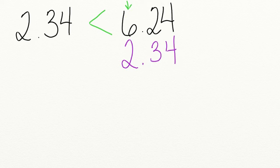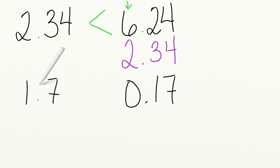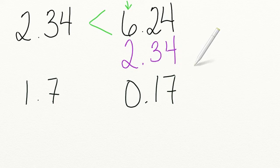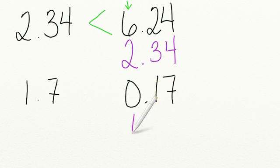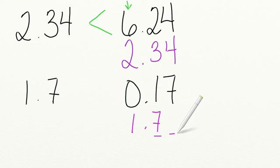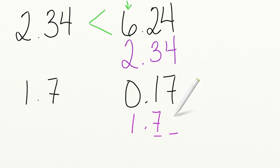Let's go ahead and try another one together. Is one and seven tenths less than, greater than, or equal to seventeen hundredths? Well, we need to line up our decimals to decide. So I'm going to write one and seven tenths below seventeen hundredths. And since one and seven tenths only goes to the tenths place and seventeen hundredths goes to the hundredths place, I'm going to put a zero in here as a placeholder.